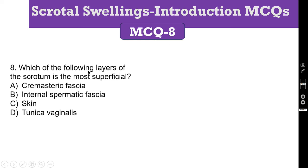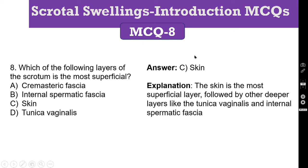MCQ number 8: Which of the following layers of the scrotum is the most superficial layer? Options: A. Cremasteric fascia, B. Internal spermatic fascia, C. Skin, D. Tunica vaginalis. The correct answer is Skin. Skin is the most superficial layer, followed by other deeper layers like Tunica vaginalis, Internal spermatic fascia, and so on. Skin is the outermost layer.